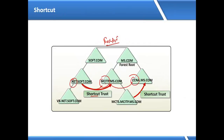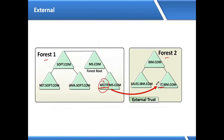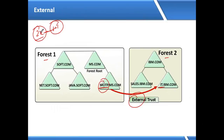Next, we have external trust. External trust is a trust between two different forests. For example, with two different forests — forest one and forest two — I want an mcitp user to log into it.ibm.com. I can't configure shortcut trust here because shortcut trust is within the forest. When you talk about two different forests, we go with external trust, which was introduced in Windows 2000 with NT domains.